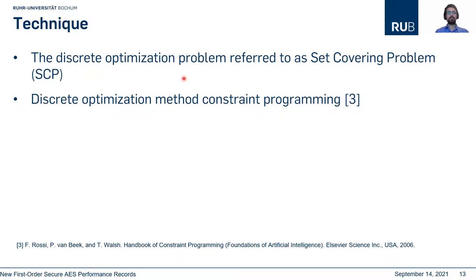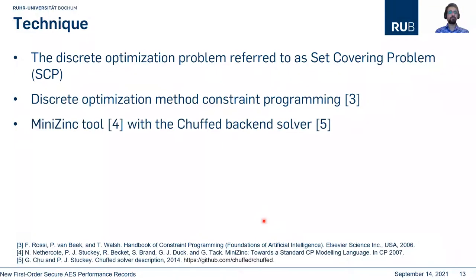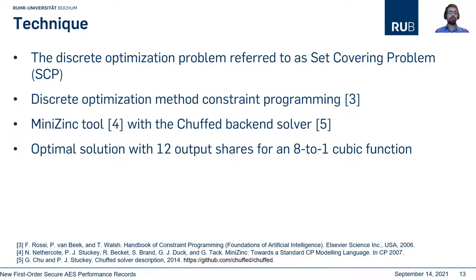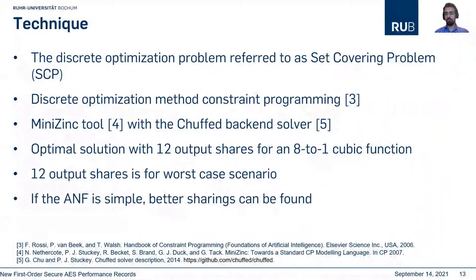This problem is called set-covering problem, which is a discrete optimization problem, and we have some methods to solve this kind of problem. We have some tools to write a program and find a solution. The optimal solution is 12 output shares from 8-bit to 1-bit cubic function. This solution is for the worst case scenario. We have a very complex ANF with 8-bit input, and the algebraic degree is 3. If we have a simple function, sharing with less number of output shares can be found. However, in our case, namely f and g, we have a very complex ANF, so we have to use 12 output shares.